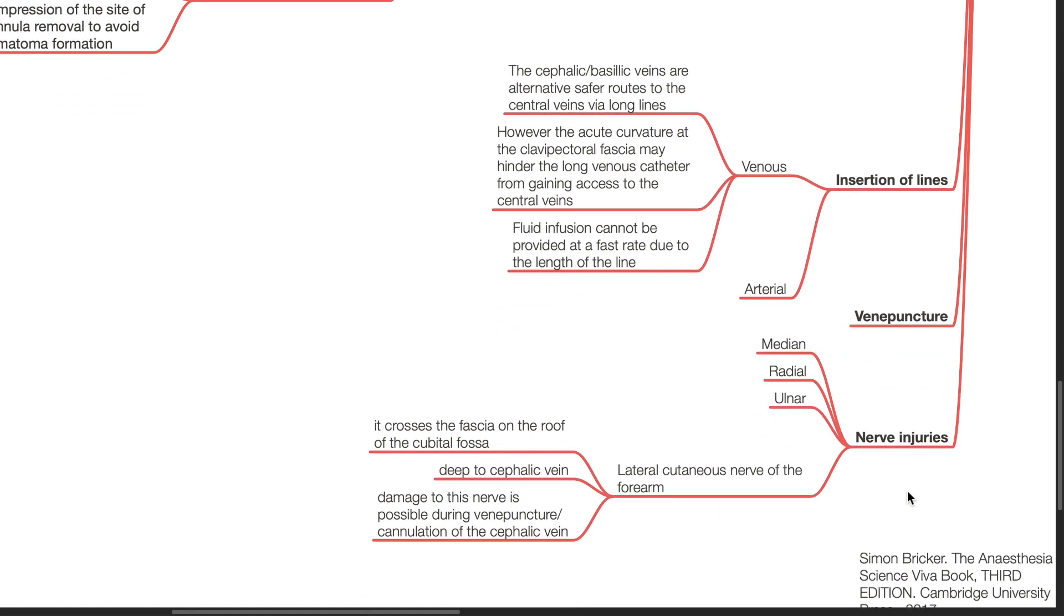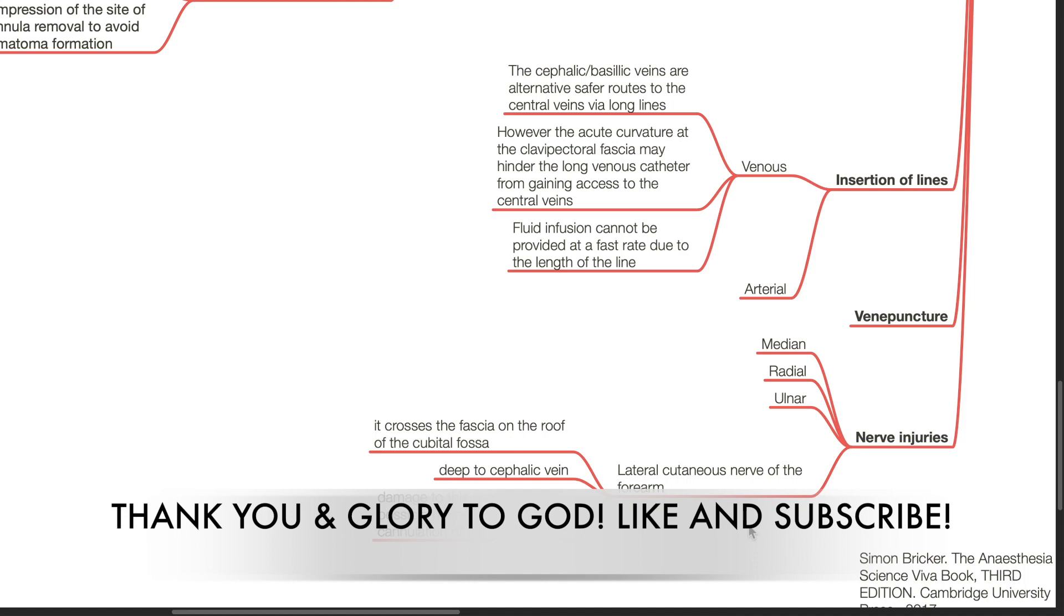Arterial line insertion will be discussed later in a subsequent video. Nerve injuries such as injuries to the median, ulnar, radial nerve are discussed in relevant videos. A link to the videos will be provided in the video description. Lateral cutaneous nerve of the forearm. This nerve crosses the fascia on the roof of the cubital fossa deep to the cephalic vein. Damage to this nerve is possible during venipuncture or cannulation of the cephalic vein.